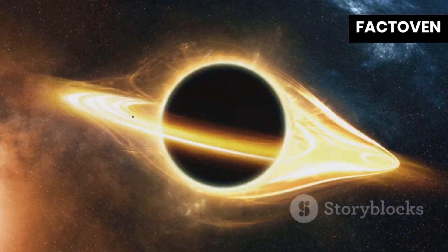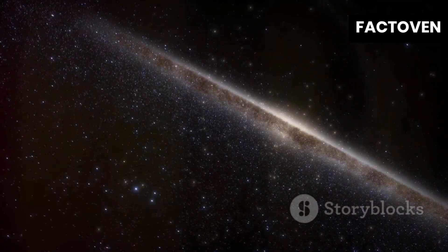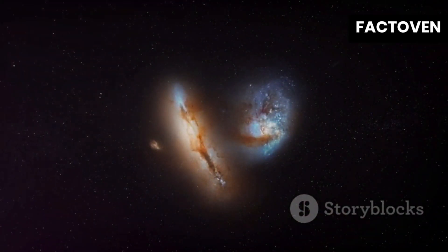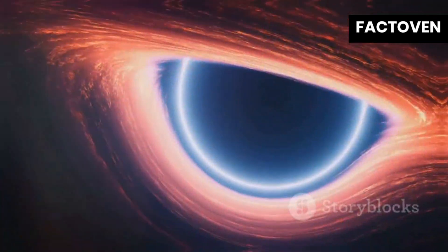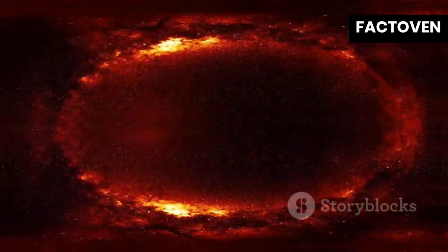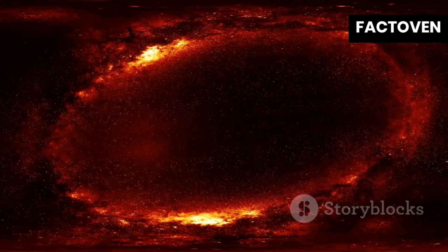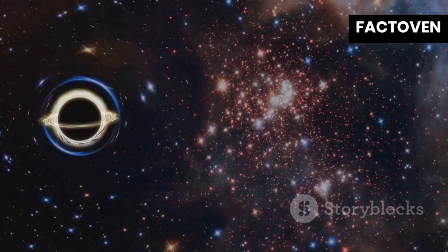The Great Attractor is a gravitational anomaly, a massive concentration of matter located millions of light-years away. It's so massive that it's pulling entire clusters of galaxies towards it, including our own. The problem is we can't see what's causing this immense gravitational pull. Some speculate that the Great Attractor could be a supercluster of galaxies or unseen structures composed of dark matter.